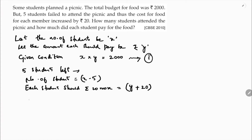So the second condition gives us: (x − 5)(y + 20) = 2000, because the total amount for food was still 2000, with five students not attending the picnic and each paying 20 rupees more.